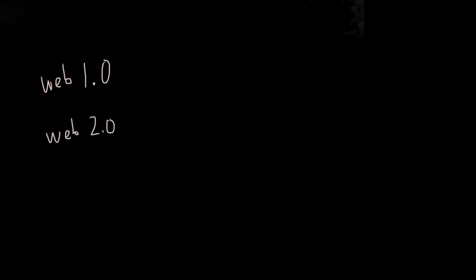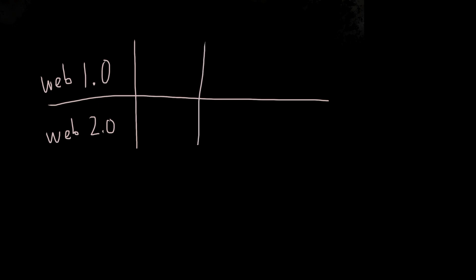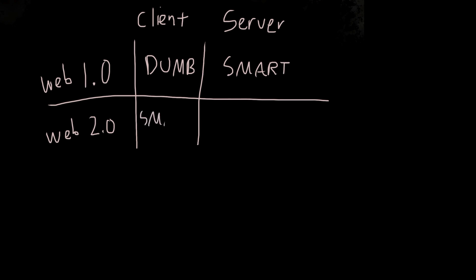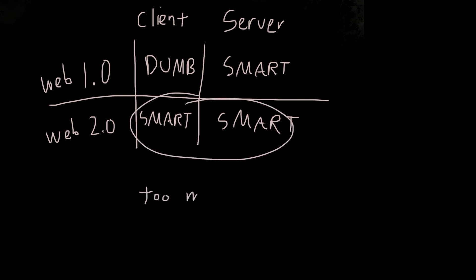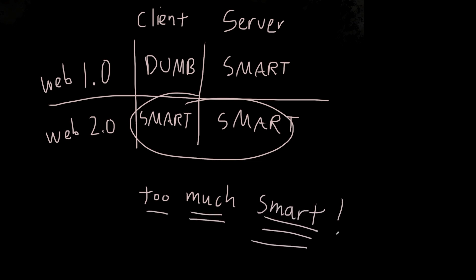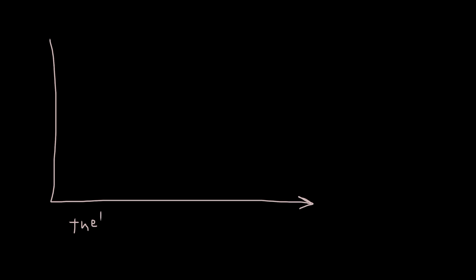Web 1.0: the server is very smart, knows what to do; the client is very dumb — just spitting stuff out. Web 2.0 — the SPA world — the server is still smart because that's your source of truth; you cannot have a dumb server, otherwise that's a security risk. Teams need multiple people editing the same data at once — you cannot do that locally on your client. But in Web 2.0, your client also has to be smart too, maintaining state. What people don't really talk about are what are the costs of adding the virtual DOM.